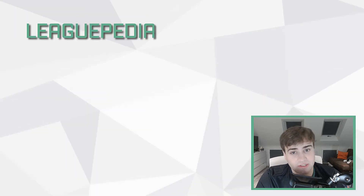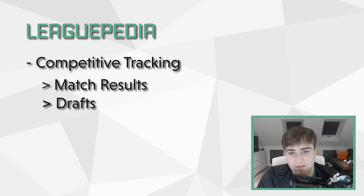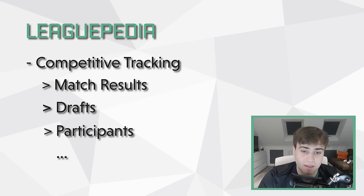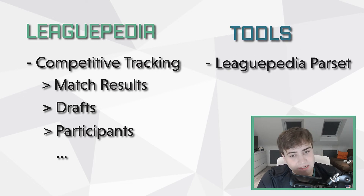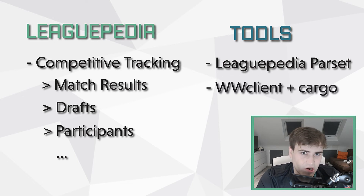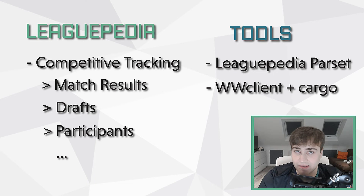Leaguepedia, as previously mentioned, is good for competitive tracking — things like match results, drafts, who played where, who played what, and how a match went. Tools for those are the Leaguepedia Parser and also the MediaWiki Client plus Cargo, which might sound like hieroglyphics, but if you Google those things you'll find tools which will help you write queries for the Leaguepedia API in Python.